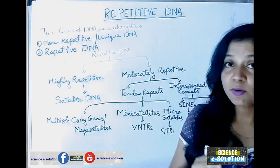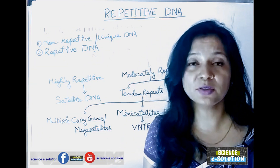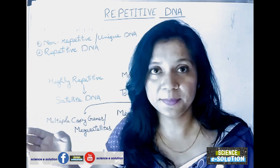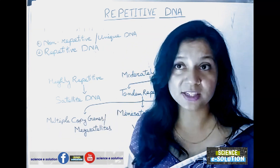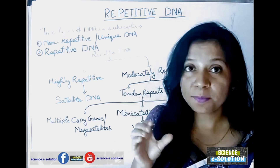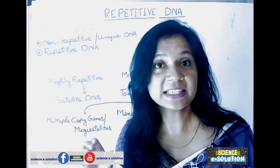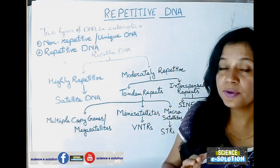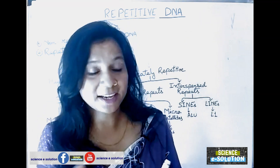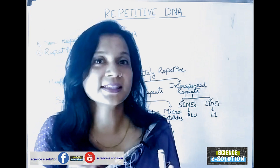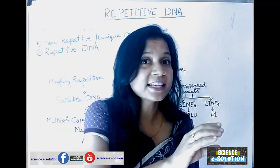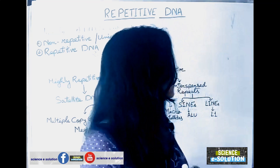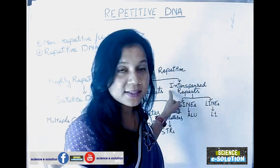Moderately repetitive DNA is again of two types: tandem repeats and interspersed repeats. Tandem means one after the other — these sequences are present adjacent to each other without any gap. Interspersed repeats are moderately repetitive sequences that are not present adjacent to each other; they are dispersed throughout the genome. One sequence can be present at one location and another at a different part of the genome, but the base pair sequence is the same.